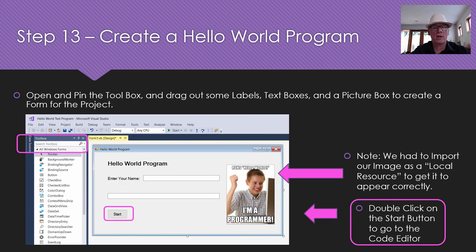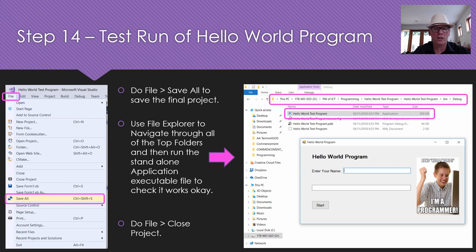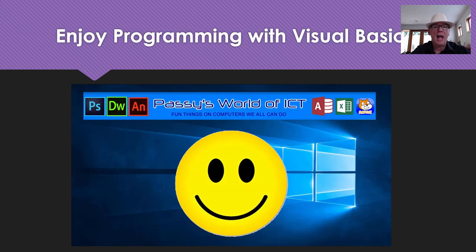On this Hello World program, we're going to have a picture box and a text box where people can enter their name. When they click a Start button on the screen, it's going to pop up a nice little welcome message. There's the code that we're going to be writing. We'll do a little test run of the program, do a Save All, and show you how it generates an application EXE file that we can run standalone — we don't even need Visual Studio running to do that.